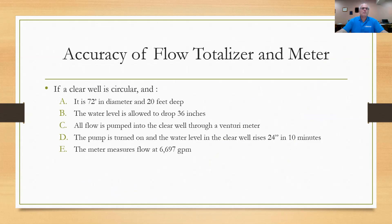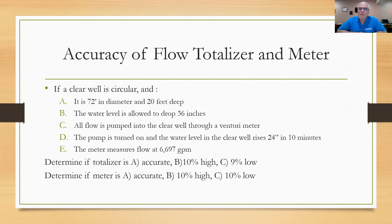Okay let's try another one. This is the accuracy of flow for totalizers and meters. They tell you that a clear well is circular, 72 feet in diameter and 20 feet deep. They tell you that the water level is allowed to drop 36 inches. Then they do a test. They tell you that all flow is pumped into the clear well through a venturi meter. You turn the pump on, water level of the clear well rises 24 inches in 10 minutes. Meter measures flow at 6,697 gallons per minute. Then they ask you to determine if the meter is A: accurate, B: 10% high, or C: 10% low. Try to work that one through and then go to the next page and see the answer.